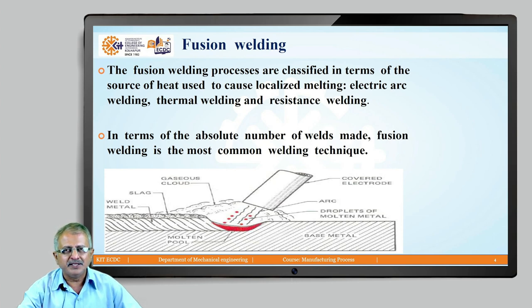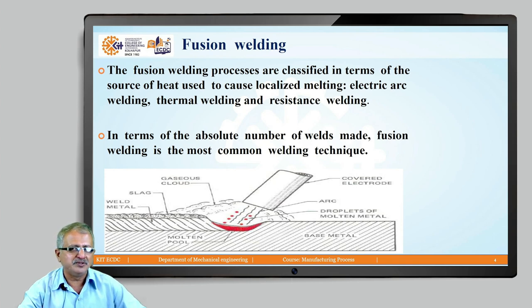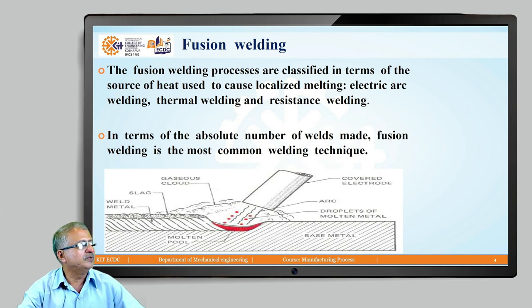The heat is generated through an electric arc between the base metal and the electrode. Depending upon the absolute number of welds made, arc welding is the most popular fusion welding process which gives a quality weld. In the schematic diagram, the base metal and electrode are shown with a gap between them. The crater generated there is because of plasma ionization — an electric discharge between the base metal and the electrode — causing localized heating and melting. The coated electrode supplies filler metal to the weld zone, and the coating provides a covering that avoids atmospheric contamination.